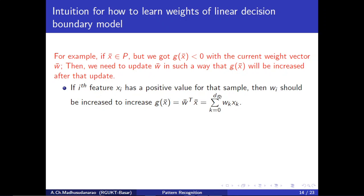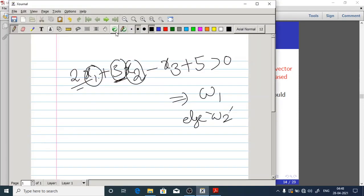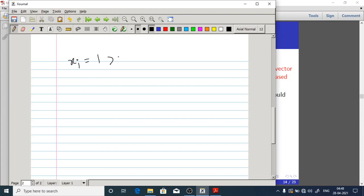If the i-th feature xi has a positive value for that sample, then wi should be increased to increase g(x-bar), where g(x-bar) = w1·x1 + w2·x2 + ... + wd·xd + w0. For example, suppose xi = 2 (positive). Then wi·xi = 2·wi. If I want to increase g(x-bar), I need to increase wi — say by adding 0.1 to wi, giving an extra 2 × 0.1 = 0.2 contribution to g.